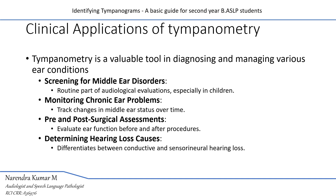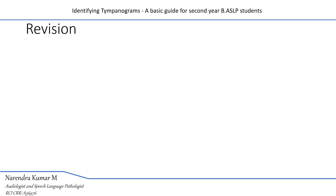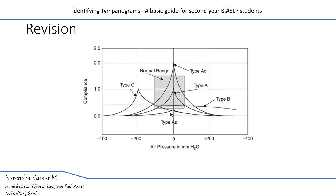These are a few clinical applications of tympanometry. To revise this video lecture: there are various types of tympanograms depending upon middle ear pressure and the mobility of the tympanic membrane. The common types are A, B, and C. Type A tympanogram indicates normal middle ear function — middle ear pressure within normal limits and compliance of the tympanic membrane within normal limits.